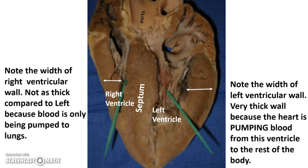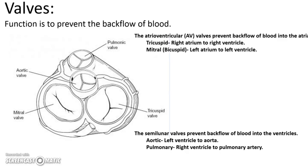Located between the atria and the ventricles on both sides are valves. Valves are very important because they prevent backflow of blood — they act like a doorway. The valves you need to know are: the mitral, the aortic, pulmonary, and tricuspid. The mitral valve has another name — bicuspid — because it has two flaps versus three like the tricuspid. Note the size difference: the mitral and tricuspid valves are larger than the aortic and pulmonary valves.